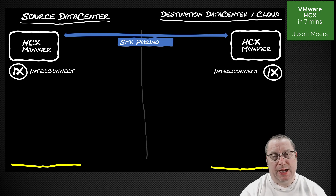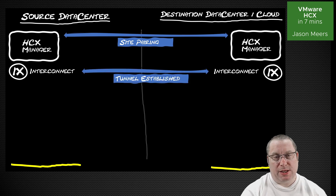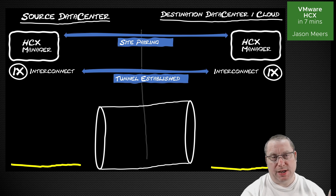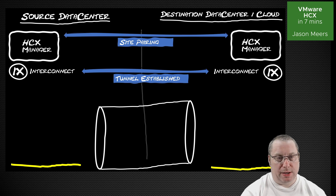The interconnect does what it says — it interconnects the two sides together. Once we've set up the interconnect, we have a tunnel established between the two sides. So we've now got this tunnel from the source data center to the destination center, and I'm going to show you pushing traffic through this in the next sections of this video.